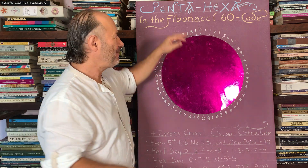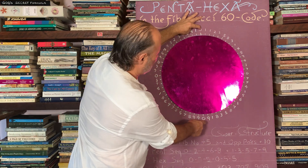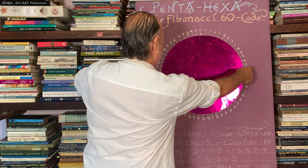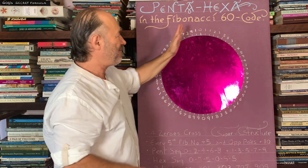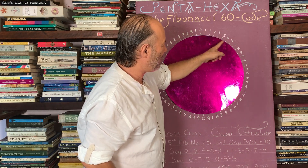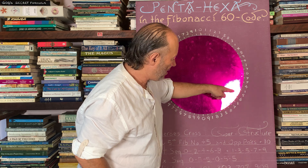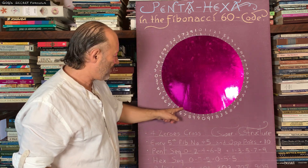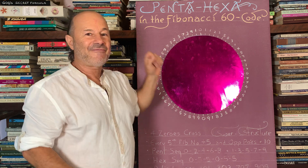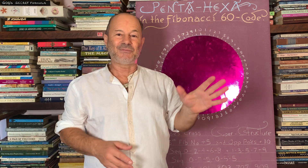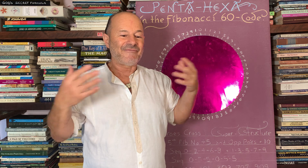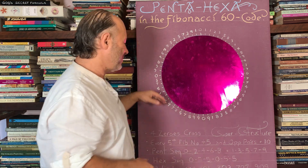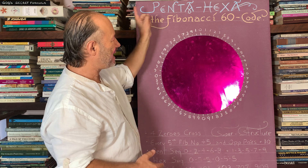Just a bit of number theory. If you notice the four zeros — there's two zeros here and two zeros there — they form a cross. That's really interesting. And every fifth Fibonacci number: 0, 5, 5, 0, 5, 5, 0, 5, 0, 5, 5. Every fifth Fibonacci number is divisible by 5, and 5 as you know is the pentacle, the five-pointed star — the shape of every protein in our body. Every cell in our body is sacred geometry.